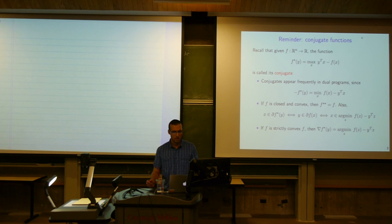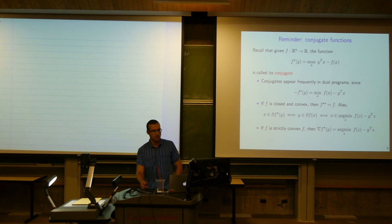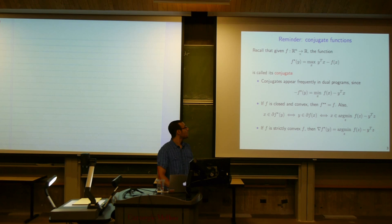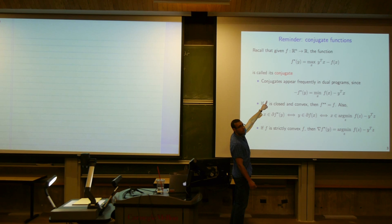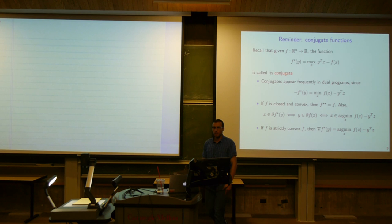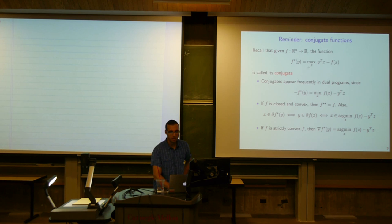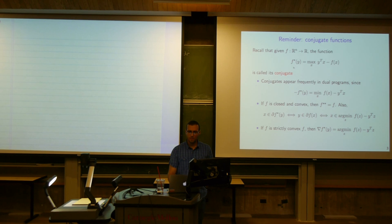An important concept for today as we jump into dual methods is the conjugate function. Given a function F, we define its convex conjugate F-star as the maximum over all x of y-transpose x minus f of x. It's called the convex conjugate to emphasize that this function is always convex regardless of the convexity of F itself.